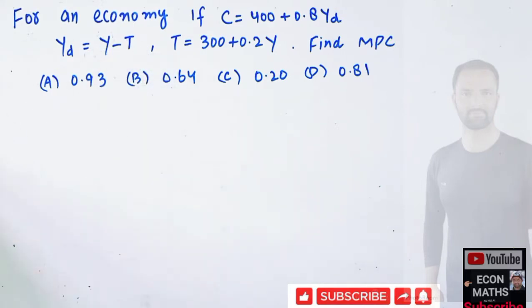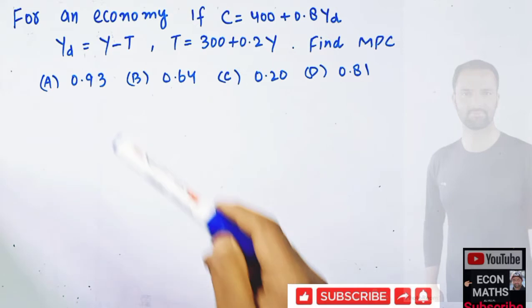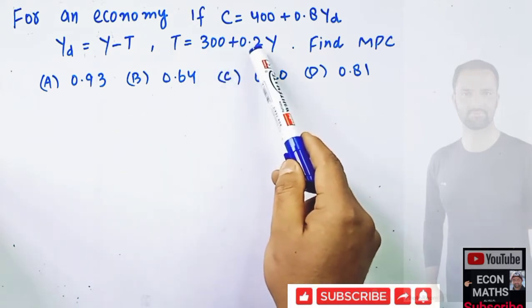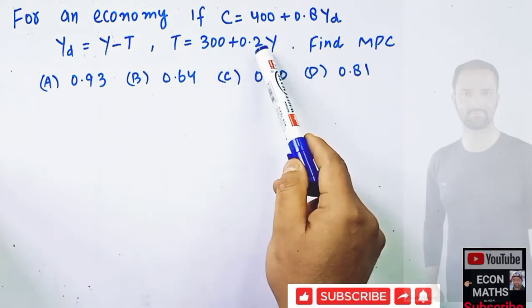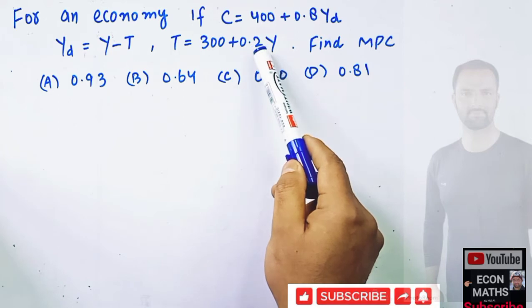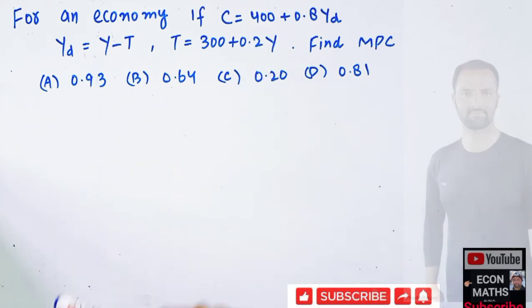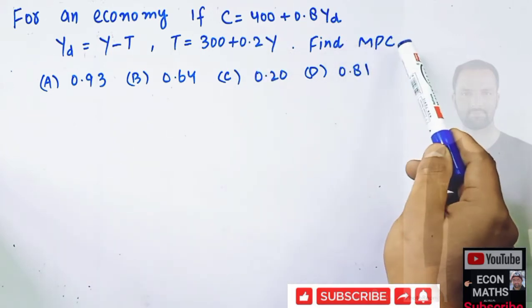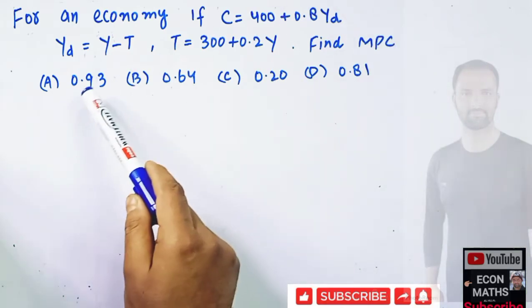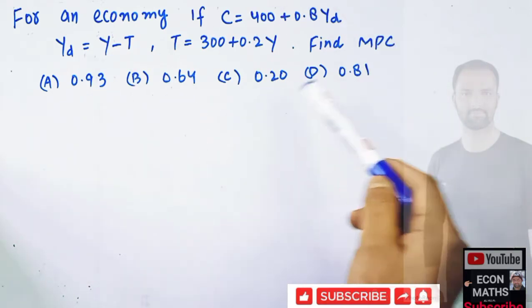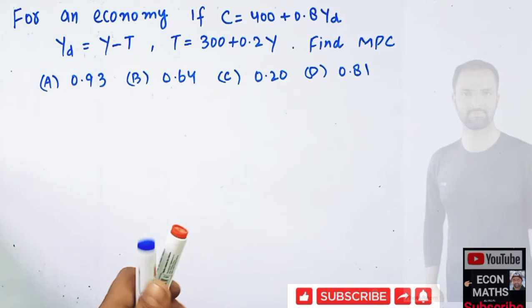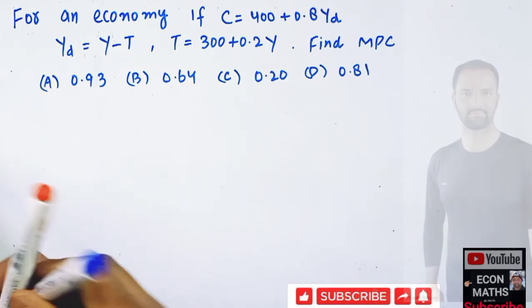Tax rate is being given as 300 plus 0.2 Y, where 0.2 is the marginal tax rate and Y is the income. We have to find out the marginal propensity to consume. The options are 0.93, 0.64, 0.20, and 0.81.